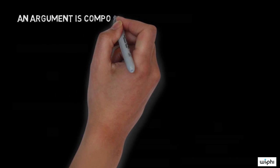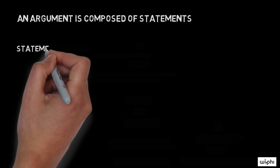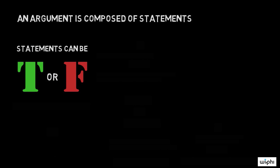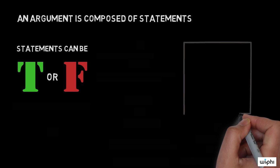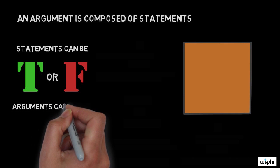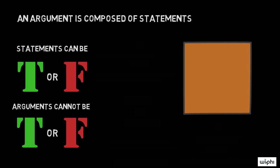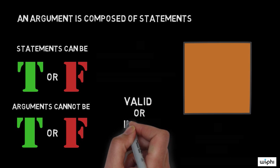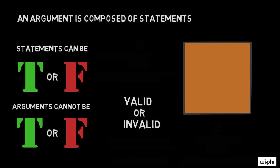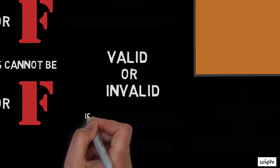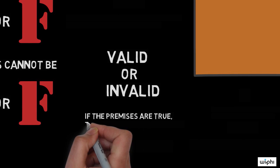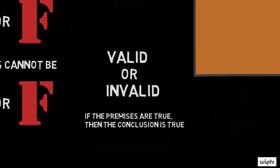So it's impossible for a valid argument to have all true premises unless the conclusion is also true. When an argument is valid in this sense, we say that the premises entail the conclusion. So let's back up for a second. An argument is composed of statements. Statements can be true or false, like the statement this square is orange. Arguments cannot be true or false. They can, however, be valid or invalid, as well as other things. And if an argument is valid, then if its premises are true, its conclusion is true.